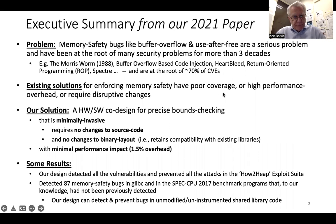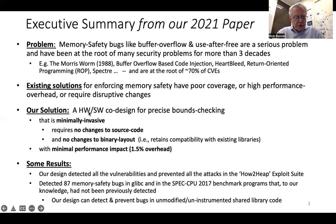As we mentioned in a previous paper, memory safety bugs like buffer overflow and use-after-free are a serious problem and have been at the root of many security problems for more than three decades. Existing solutions for enforcing memory safety have poor coverage, high performance overhead, or require disruptive changes. Our solution combines hardware and software to allow for precise bounds checking that is minimally invasive, requiring no changes to source code and no changes to binary layout, which is important for retaining compatibility with existing libraries.